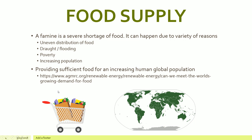A famine is a very severe shortage of food. It can happen due to several reasons: uneven distribution of food — some parts of the world have a whole lot more food than others — drought or flooding that can affect the environment and reduce food supply, poverty, and just an increasing size of the population. The food is limited but the population is rising, causing a famine.